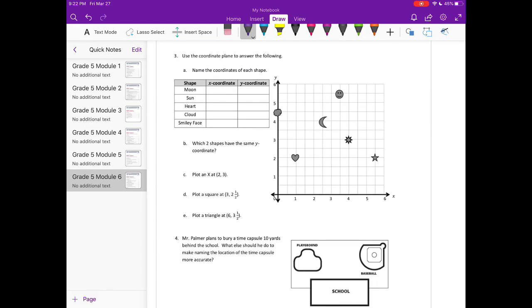Number three: use the coordinate plane to answer the following. So this time they're giving us the shape and they want us to give the coordinate. So the moon: here's the moon. The moon is at one, two, three. Oh, nope, it's at two and a half, and then four. So the x-coordinate is two and a half, and then the y-coordinate right here is four. The sun right here is at x-coordinate four, and then the y-coordinate if you move over is three. The heart: the x-coordinate is one, and the y-coordinate is two. The cloud: the x-coordinate is zero, and the y-coordinate is four and a half.